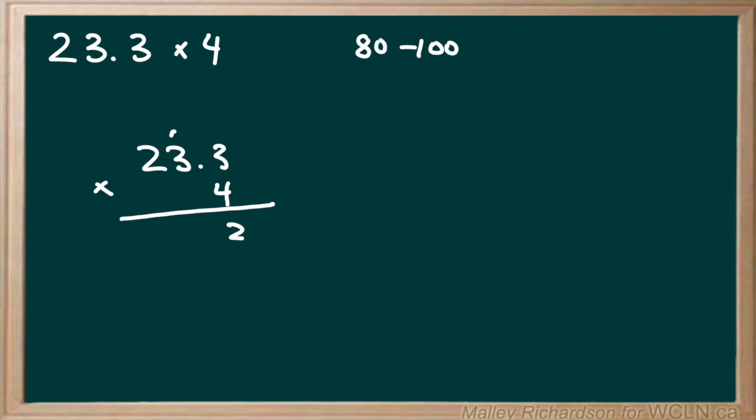We have 4 times 3 which is 12 again and then 12 plus 1 gives us 13. We bring the 3 down and carry the 1. And then 4 times 2 is 8 or 8 plus 1 gives us 9.